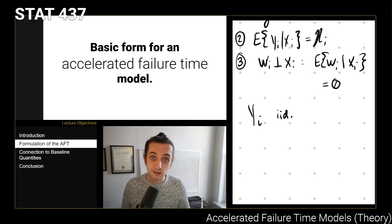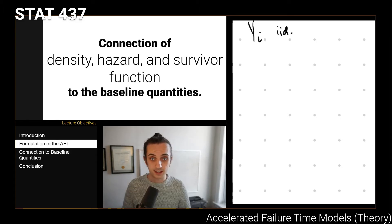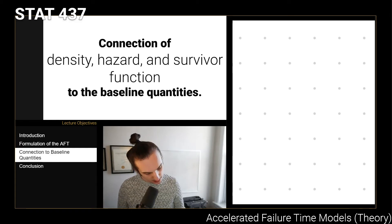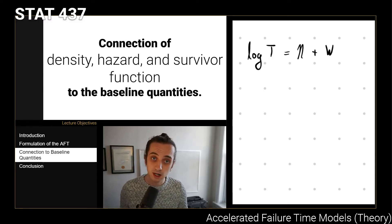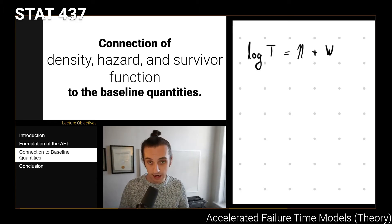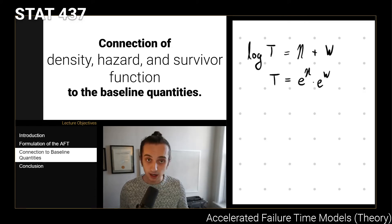This mathematical framing should be quite familiar because it's basically what we have in linear regression and in GLMs. Once we have this specification, we consider log(t) = eta + w, and if we want to shift back to the scale of t to think about the survival time itself, then t equals e to the power of eta times e to the power of w.